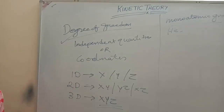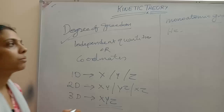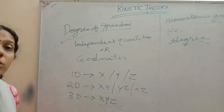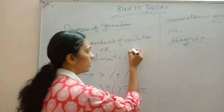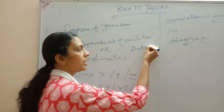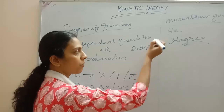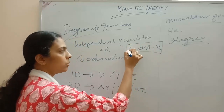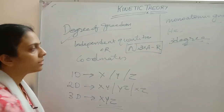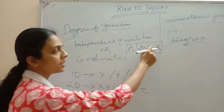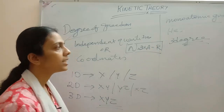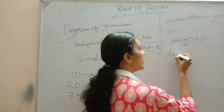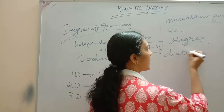For a monoatomic gas, there will be three degrees of freedom. The formula for degree of freedom is: f = 3A − R, where A is the number of atoms and R is the number of restrictions. So three atoms times one atom minus zero restrictions gives three degrees of freedom — it moves in three dimensions.